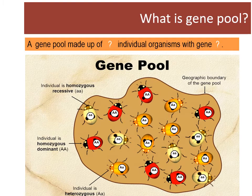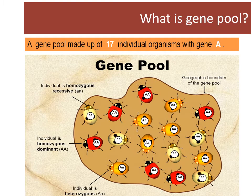What is gene pool? Let's look at this example. Can you complete this sentence? I will give you a few seconds to count the number of individuals and identify the gene for this population. This gene pool is made up of 17 individual organisms with gene A. The collection of all the alleles of gene A found within a freely interbreeding population is known as the gene pool of the population. Each member of the population receives its alleles from their parents and passes them to their offspring in the next generation, meaning every new individual born into the population changes the genetic composition of that population.